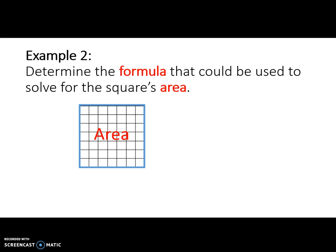Let's confirm by counting the square inches along the square's length. One, two, three, four, five, six, seven. The length of this square is equal to seven square inches.